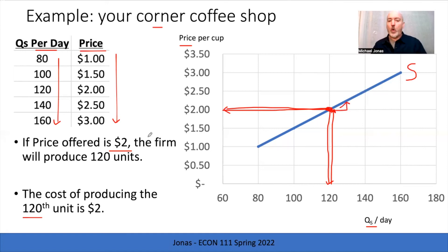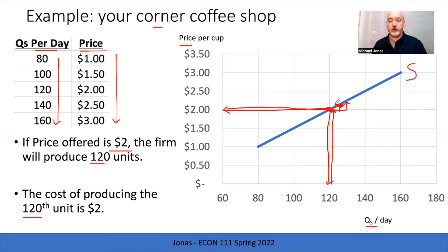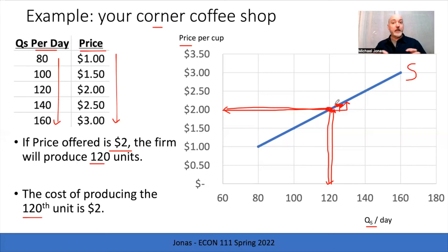Why would they stop at 120 units? Why not produce 121? Because the 121st unit is going to cost more than $2. You wouldn't produce something for which you cannot recover the cost of production. So once we hit that point, that's where we stop — that break-even point on the last unit produced. The height of the curve represents the cost of production; the horizontal position represents the maximum quantity produced at that given price.